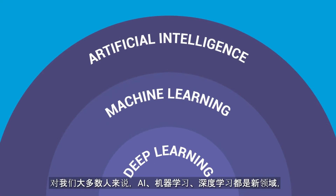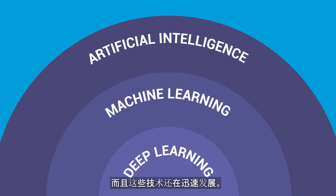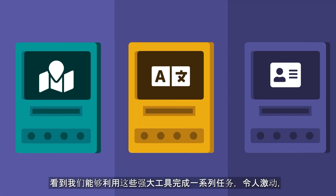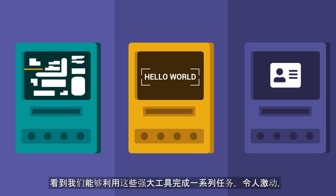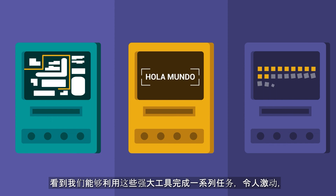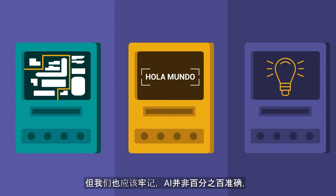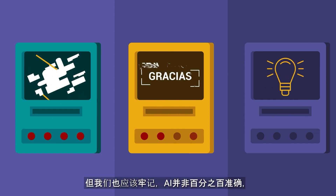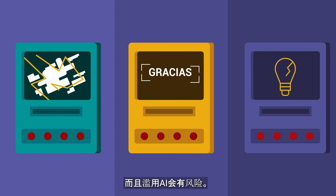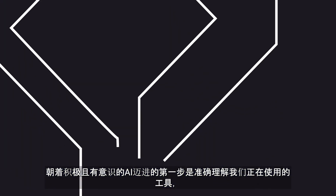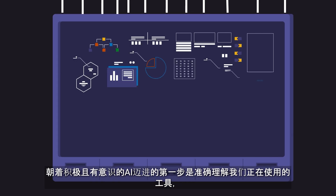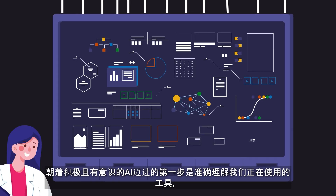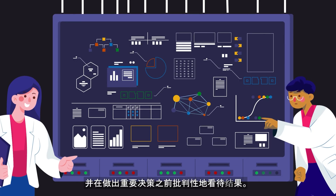AI, machine learning, and deep learning are all new fields for most of us, and are moreover rapidly growing. It's exciting to see what we are able to accomplish with these powerful tools. But we should also keep in mind that AI is not 100% accurate, and that there are risks associated with its misuse. The first step in working towards positive and conscious AI is understanding exactly the tools that we are working with, and by looking critically at the results before taking important decisions.